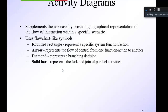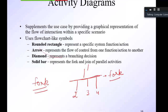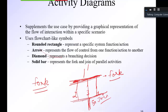Fork and join: suppose you have an activity that is further divided into different parts — part one, two, three, four. The solid bar where the activity splits is known as a fork. When those parts come together to form another part, that solid bar is known as a join.